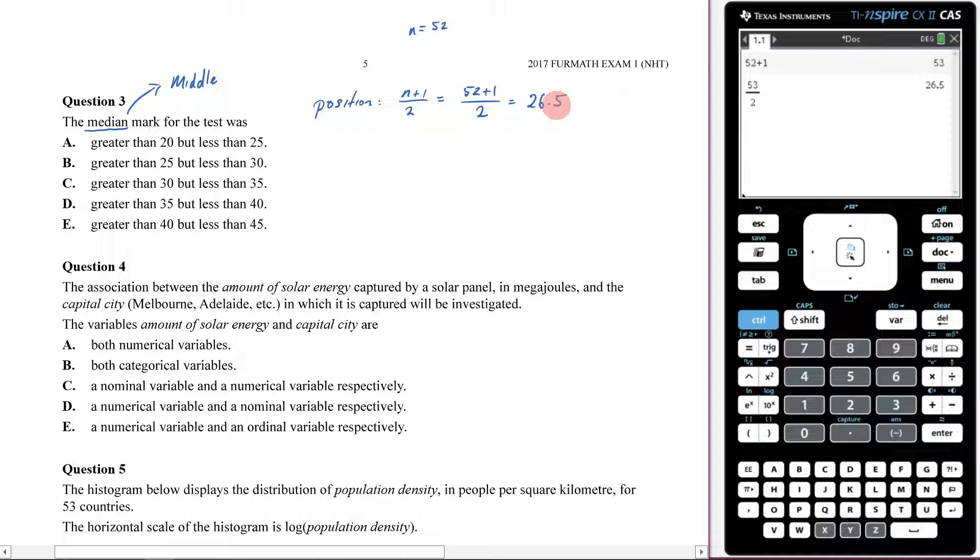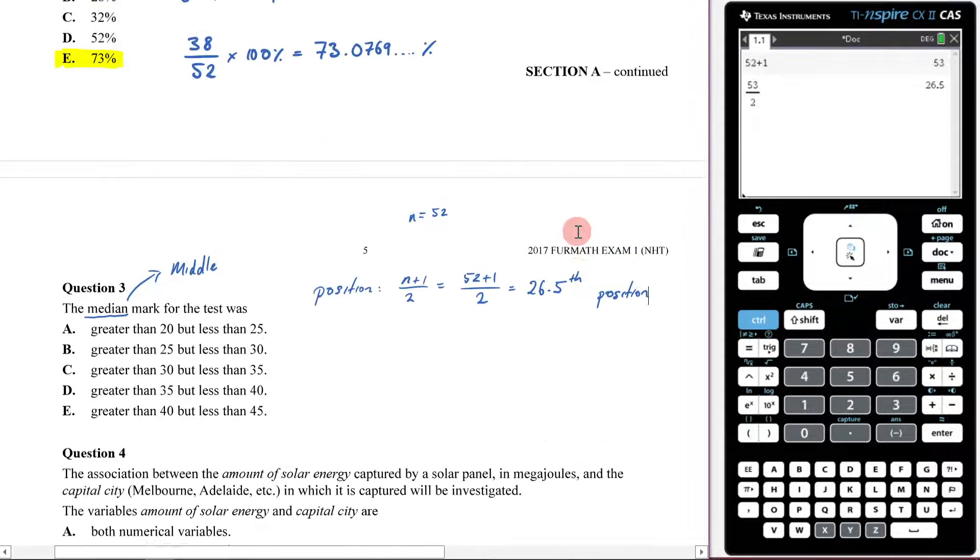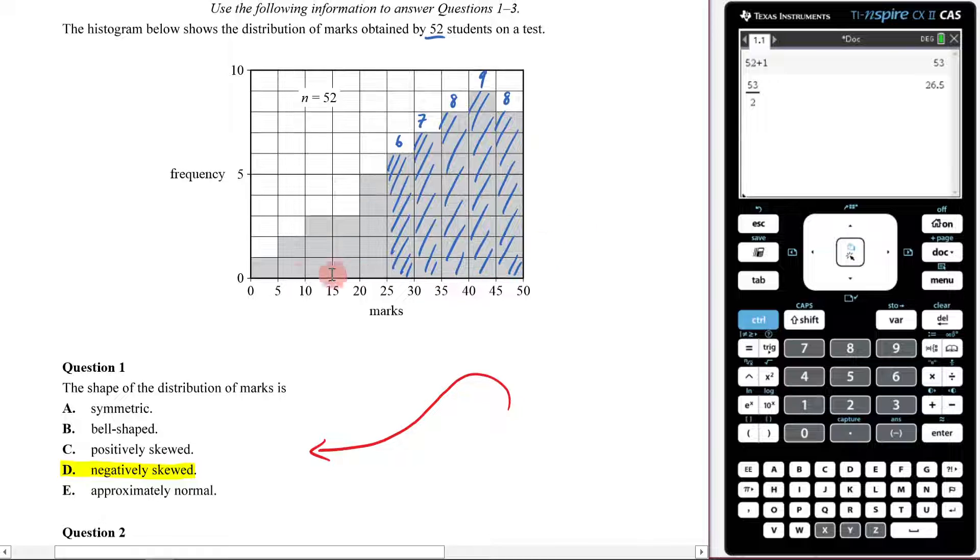Now that we've got 26.5, remember what that's telling us is that the 26.5 position is your middle position. That's the middle number right there. So we have to come back to our graph now and figure out which interval does this lie in? Which interval does that middle position lie in?